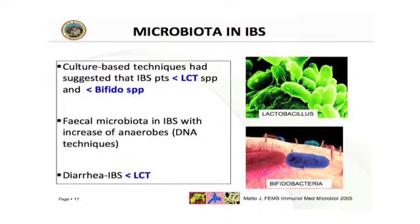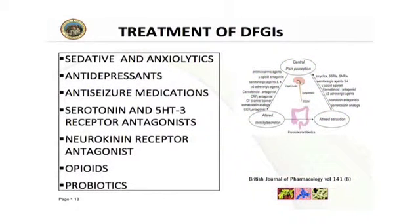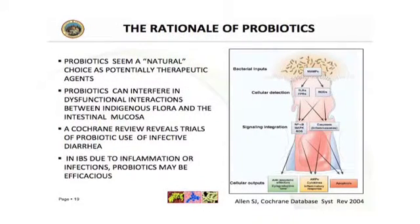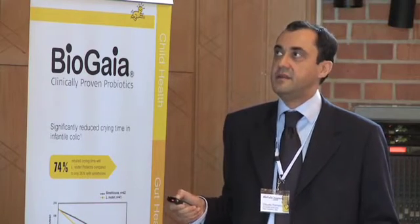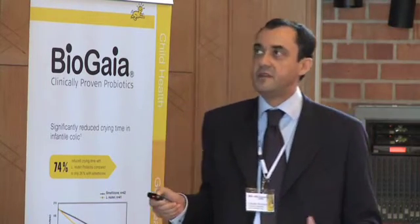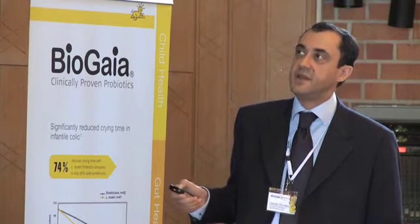This dysbiosis in irritable bowel syndrome was demonstrated in the adult population. If we consider possible treatments, there are many drugs, but for the pediatric population there are no trials for these drugs. Probiotics seem a natural choice as a potentially therapeutic agent, because for many gastrointestinal conditions, a Cochrane review reveals efficacy of probiotic use — for example, in infective diarrhea.